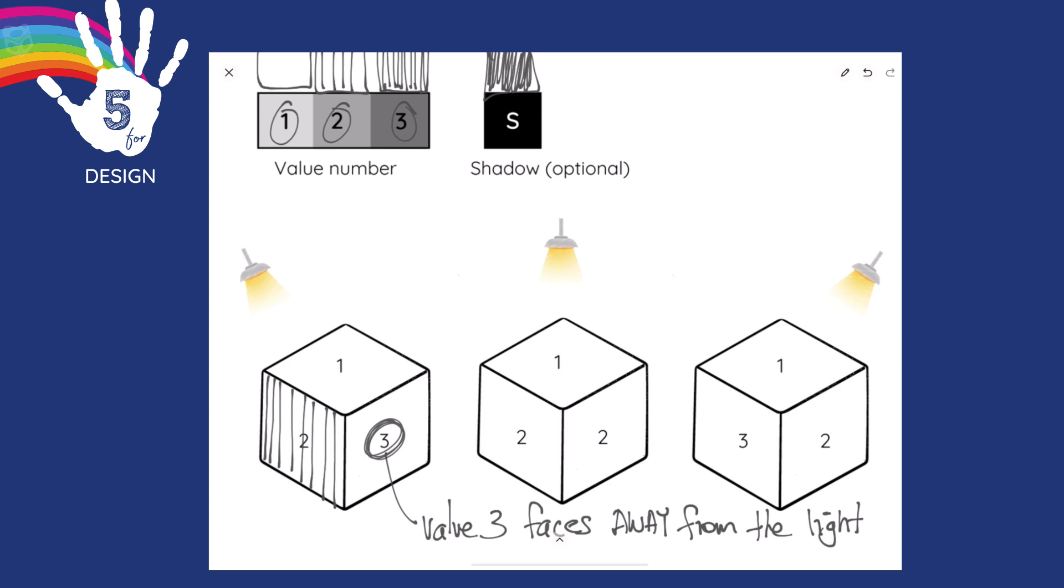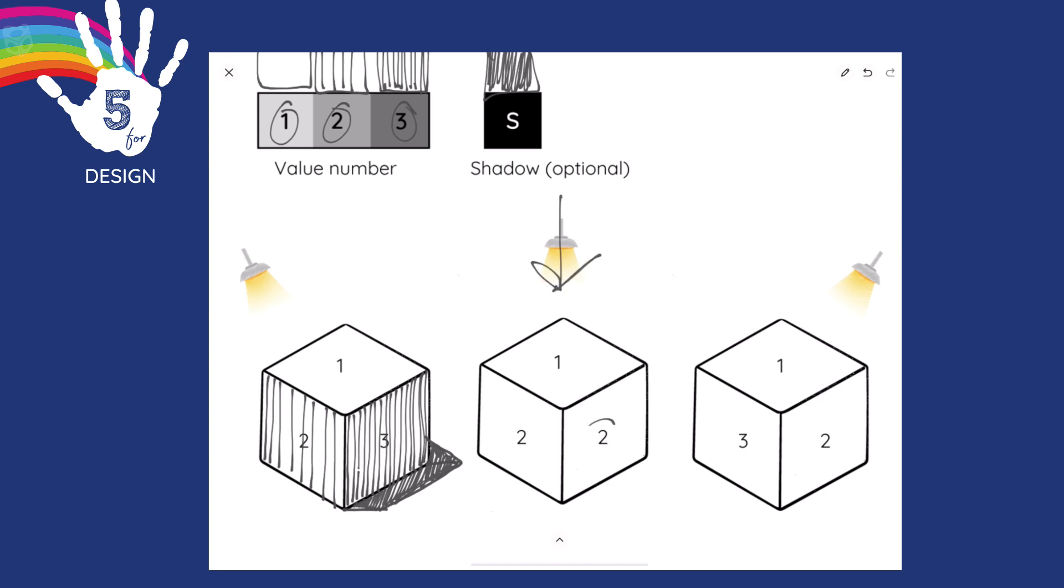You can color in according to the values or you can use lines. Sometimes designers will even use dots. When we are assigning a level one, it's receiving the most light. Level two, less. And level three or value three receives the darker shading because it faces away from the direct light closest to the shadow. So it helps us understand where we also have to place a shadow on our design. Now, when designers are shading, they actually refer to this process as rendering. It helps give us more information about a design.